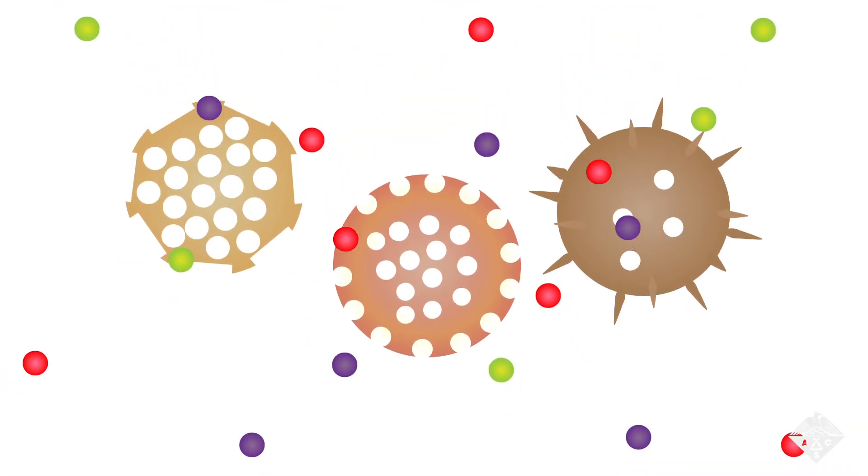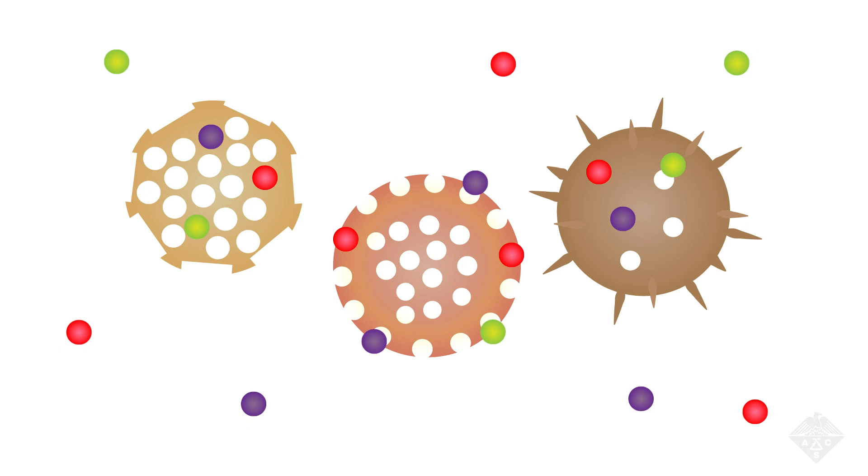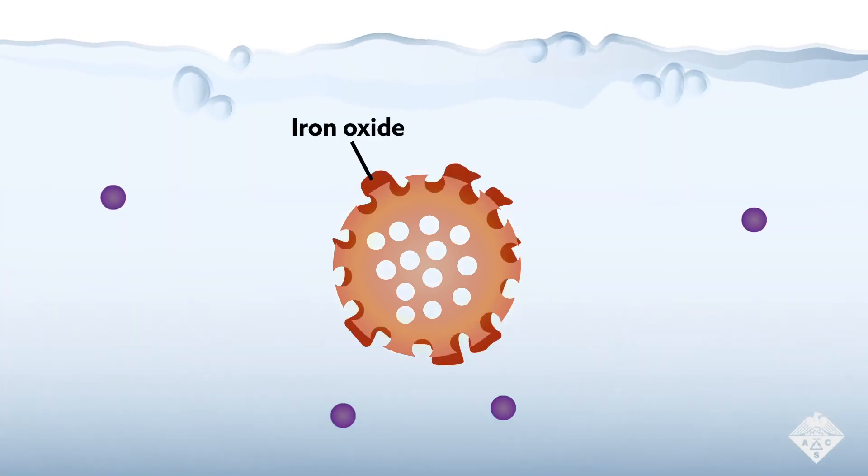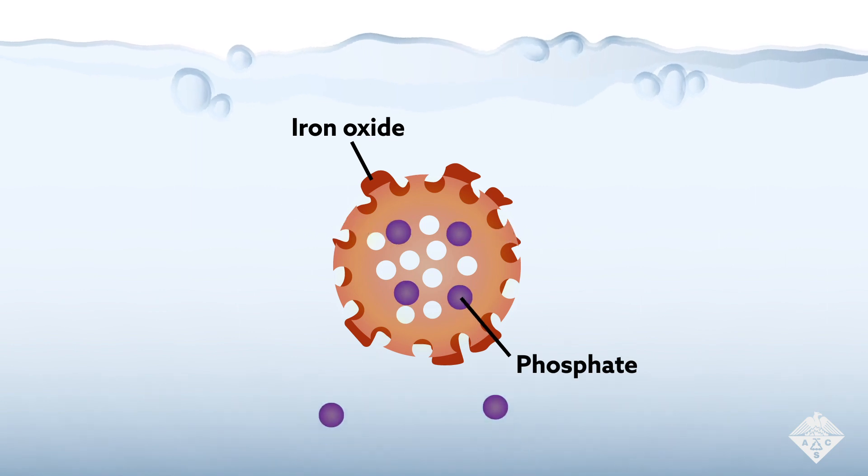The spore grains are quite versatile. They can be engineered to absorb very specific pollutants. For example, grains with iron oxide on their surface might be used to remove phosphate, like you might find in fertilizer, from agricultural water.